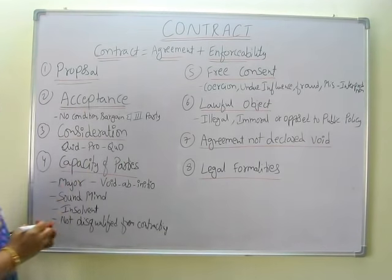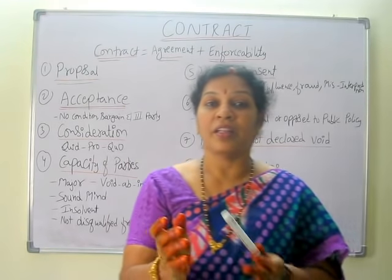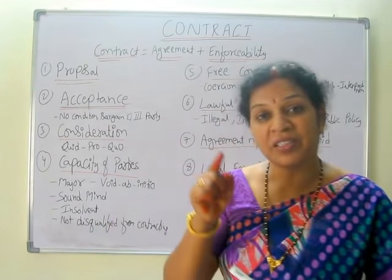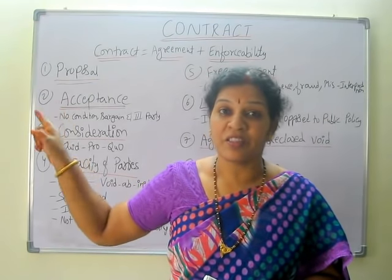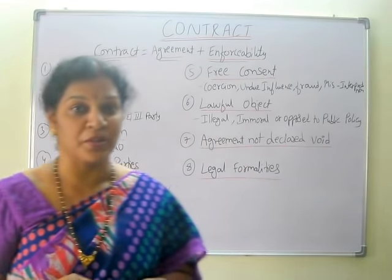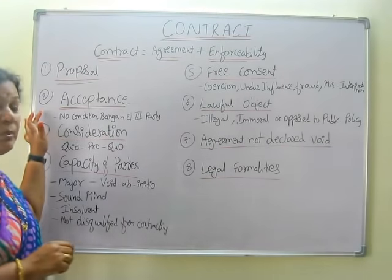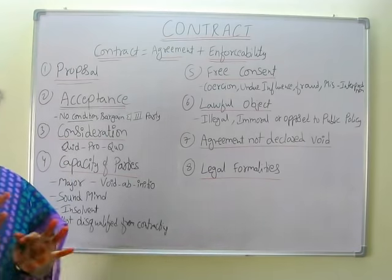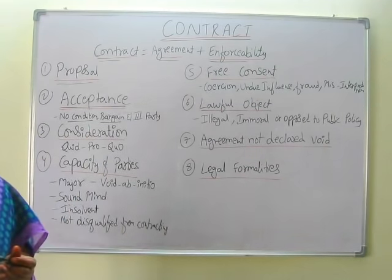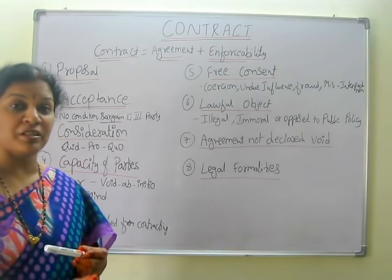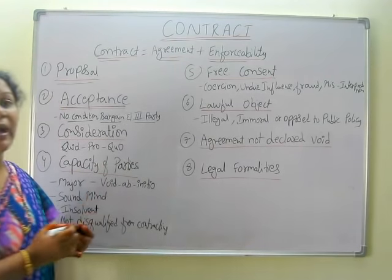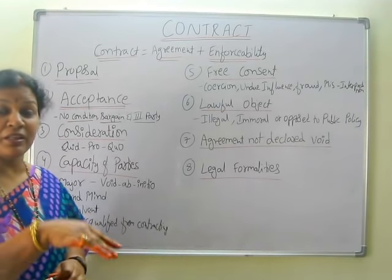Then, after proposal, comes acceptance. When the promiser is proposing to someone, the person to whom he proposes becomes the promisee, and that person has to give the acceptance — that is the second feature. Acceptance must be given by the promisee as per the agreement and conditions discussed. Remember: there should not be any condition attached, and there should not be any bargaining. A set one amount, and B has to accept it. When B bargains, A has to agree to the same; otherwise it will not become a valid contract. Similarly, no third party should be accepting it.